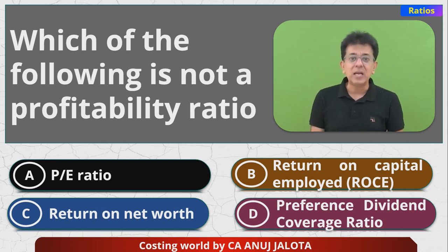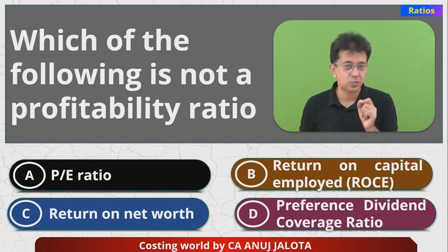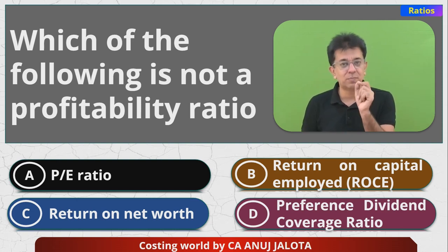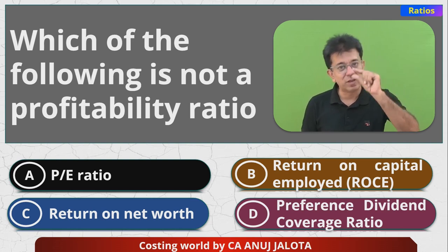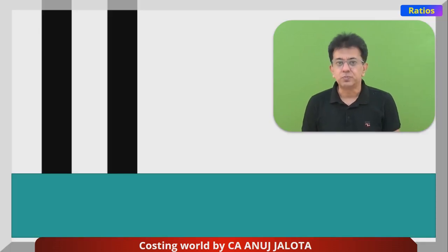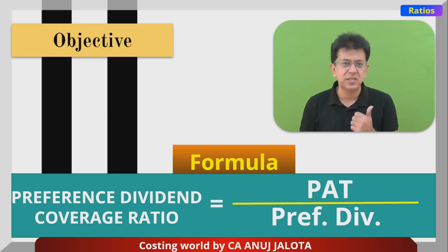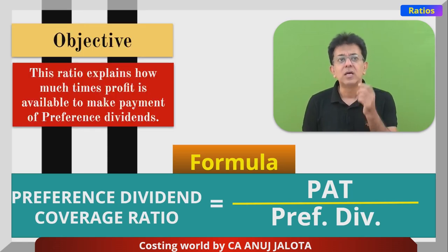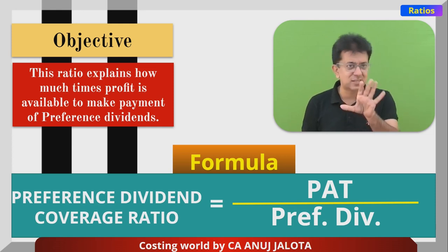Option D — Preference Dividend Coverage Ratio — if a company has issued preference shares and has profit, it is mandatory for the company to pay the dividend. How many times your profit is available to pay preference dividend is the Preference Dividend Coverage Ratio. The formula is PAD divided by Preference Dividend. The objective is to find out how many times you are making profit available to pay preference shareholders.